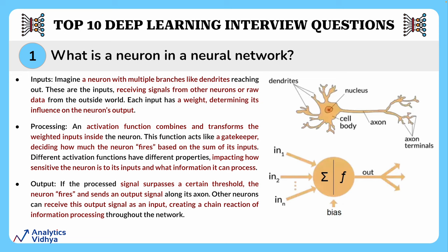Then comes processing. An activation function combines and transforms the weighted inputs inside the neuron. This function acts like a gatekeeper, deciding how much the neuron fires based on the sum of its inputs. Different activation functions have different properties, impacting how sensitive the neuron is to its inputs and what information it can process.